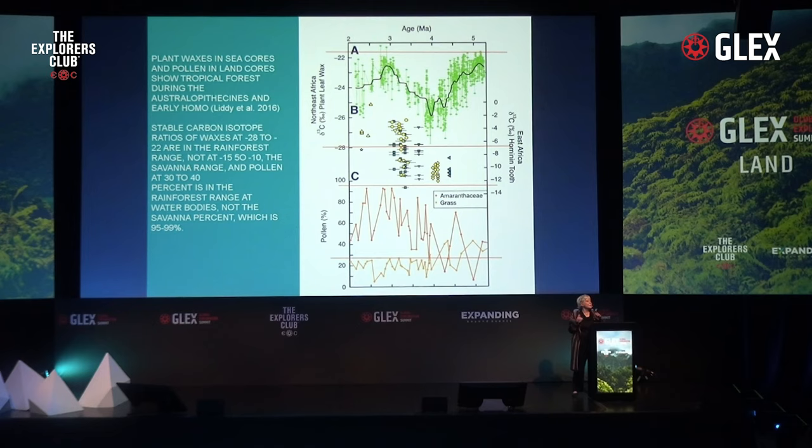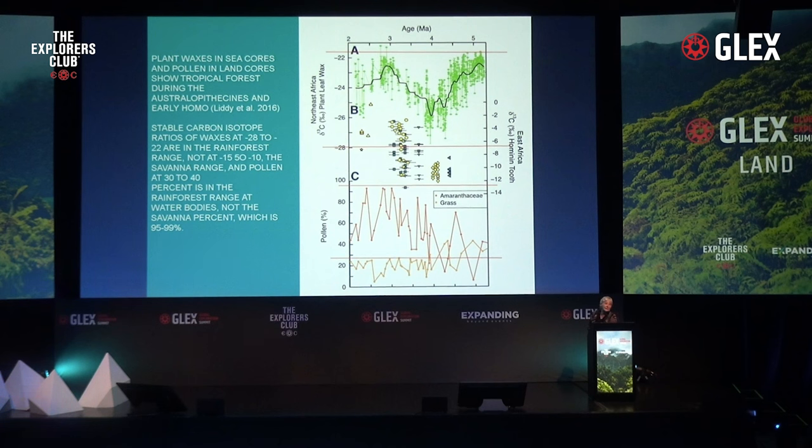When we look at grass pollen, it has been judged as showing savanna even when it represents only 50% of the pollen of a profile. But when researchers have looked at what the actual pollen rain of a savanna is versus a forest, there is no pollen rain like a savanna in the prehistoric period. Savannas have 95% to 99% grass pollen, and none of the prehistoric pollen records have that — so there are no prehistoric savannas supported by the pollen data.